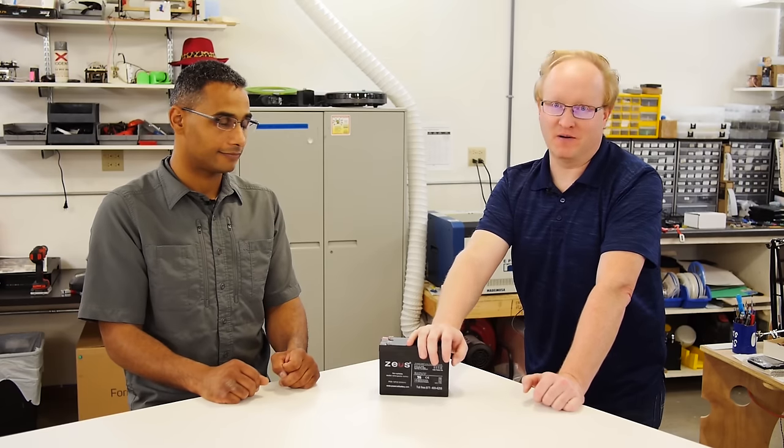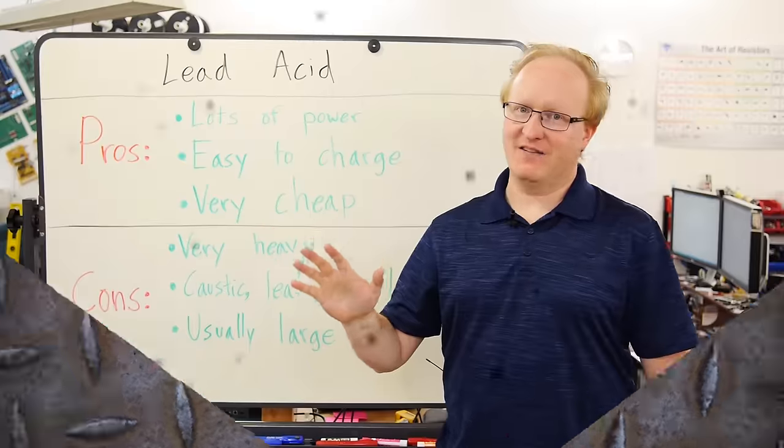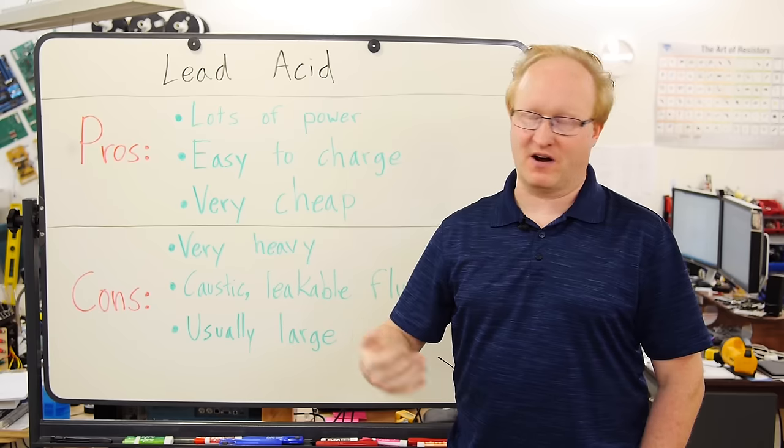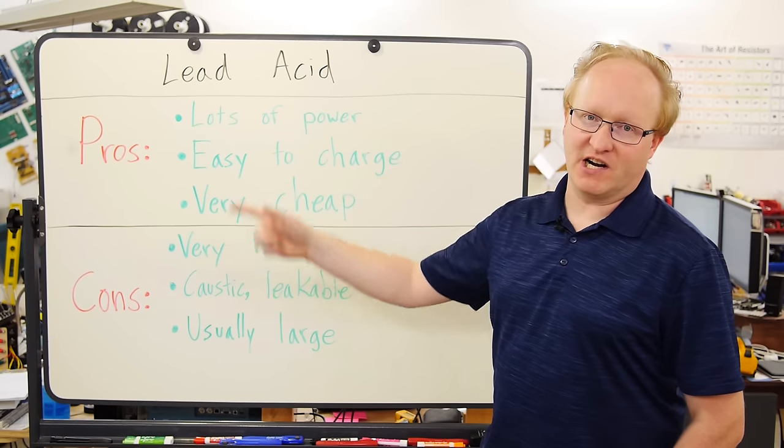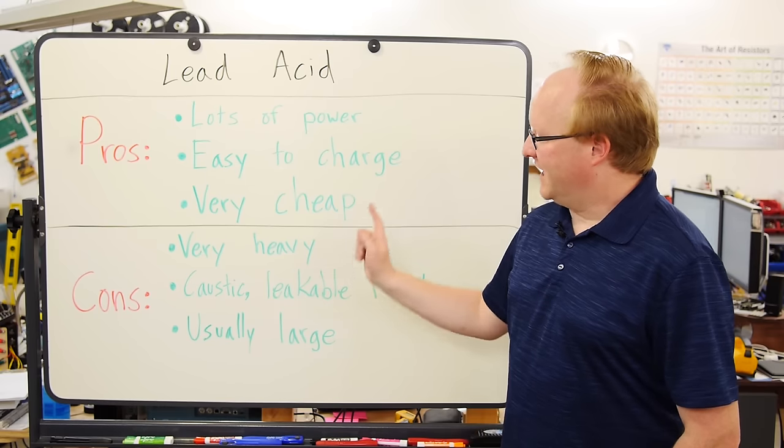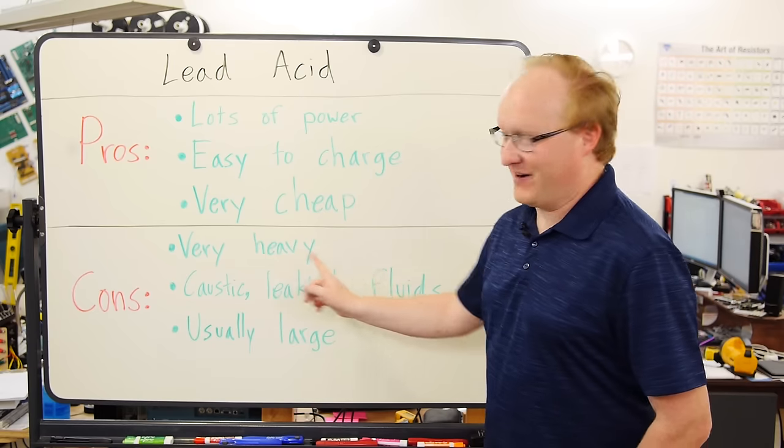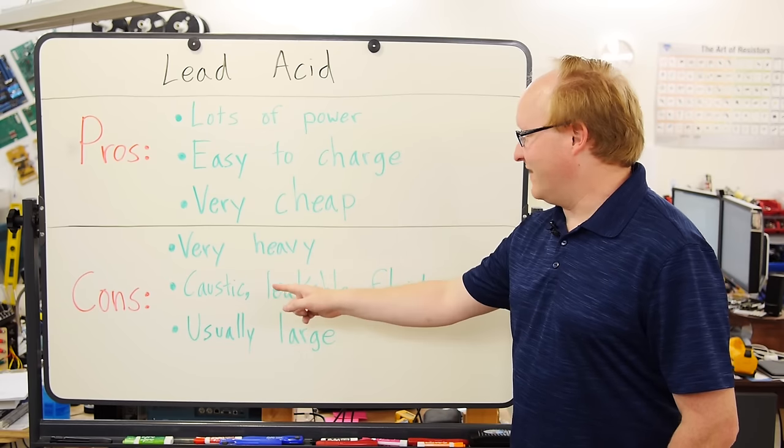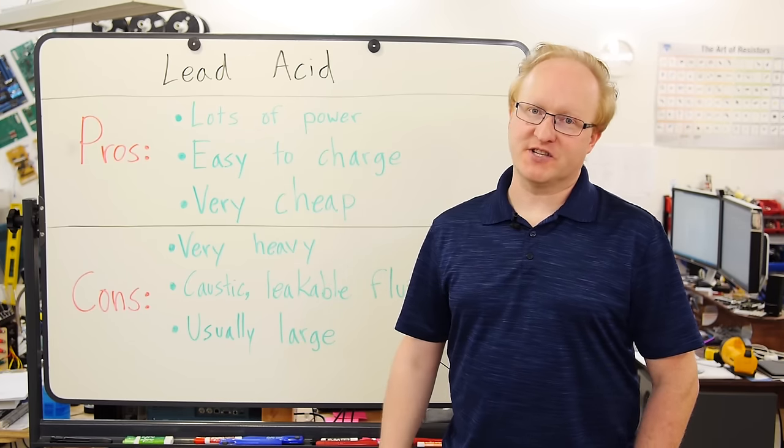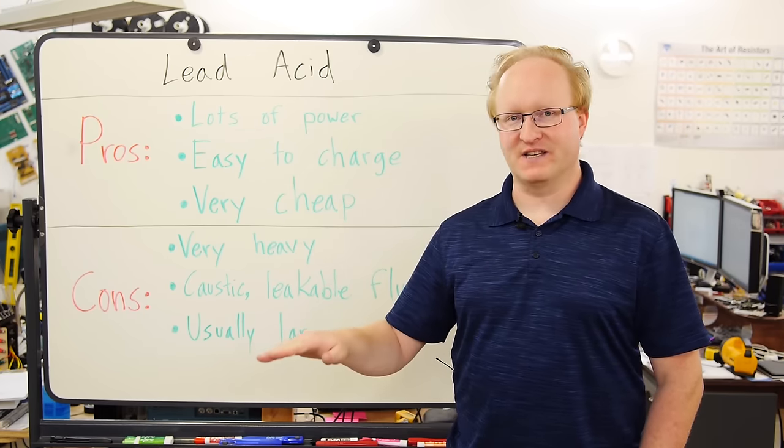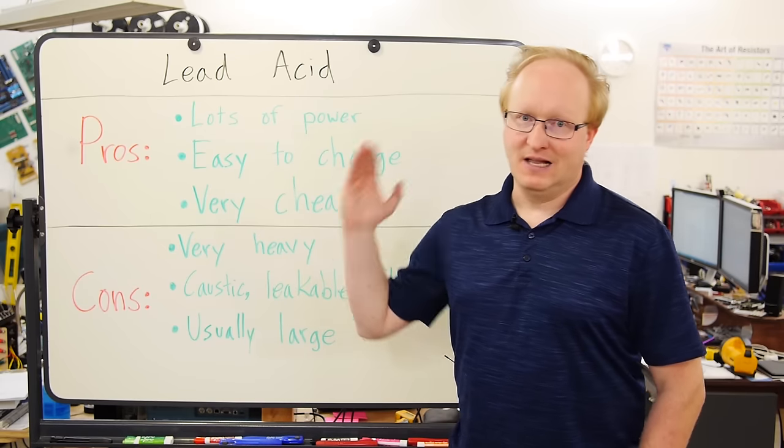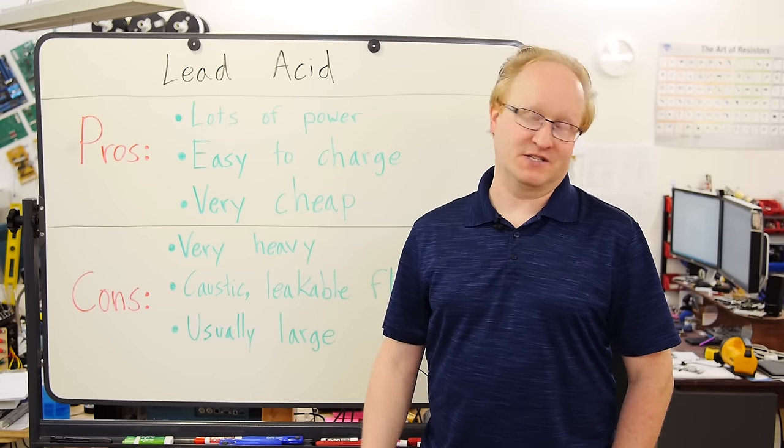Lead acid battery pros and cons. Pros, there's lots of power, good burst current if you want to start up a car or something. They're easy to charge, very simple circuits, or you can buy chargers from your local hardware store for a great price. And they're very cheap. Cons, they're very heavy. They have caustic leakable fluids inside of them. And they're usually quite large. If you want to trickle charge something, keep it charged all of the time, and then when you do need to use it, have a lot of available current, and you don't care about how much space it takes up, lead acid can be a good choice. They still use them in cars today.